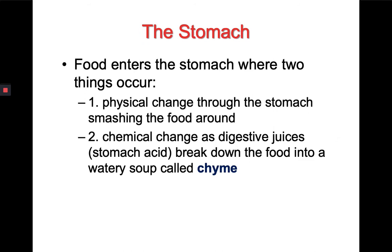The next part of the digestive system is the stomach. Two things occur in the stomach. First, a physical change happens to the food as the stomach smashes and squishes it around through muscle contractions, and second, a chemical change happens as digestive juices and stomach acid break down the food into a watery soup called chyme.